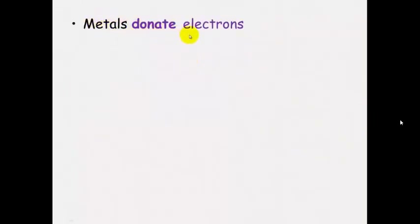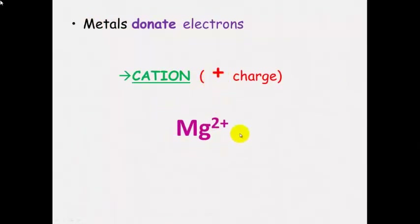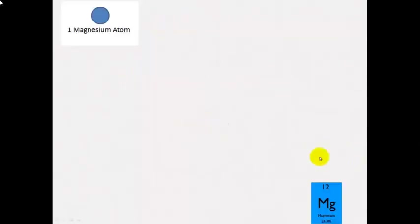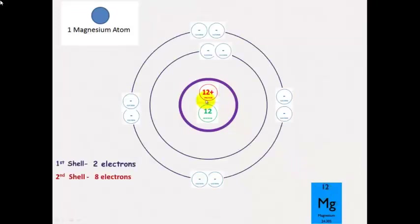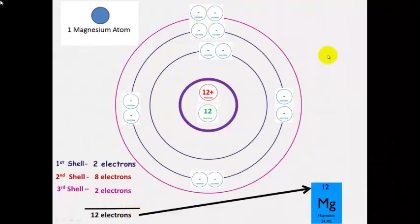Metals donate electrons to form cations, which have a positive charge. For instance, magnesium will donate 2 electrons to get a positive charge. If we look at magnesium, we can tell by the atomic number that there are 12 protons, which means in a neutral atom there have to be 12 electrons — 2 in the first shell, 8 in the second shell, 2 in the third shell. So it has a configuration of 2, 8, and 2.